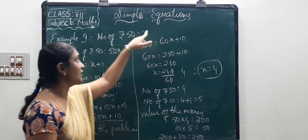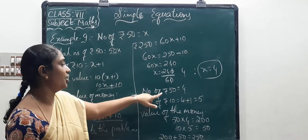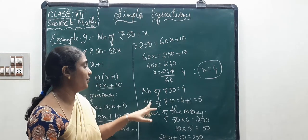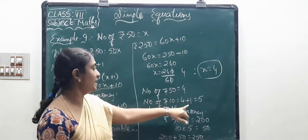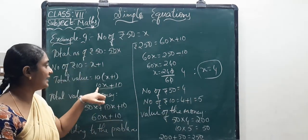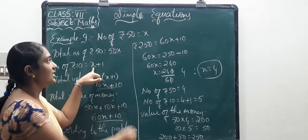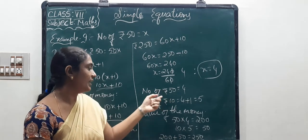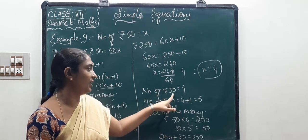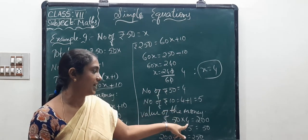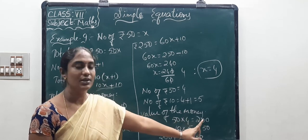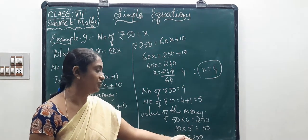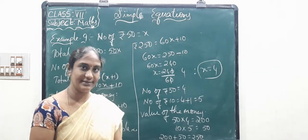Substituting X equals 4: number of 50-rupee notes equals 4. Number of 10-rupee notes equals X plus 1 equals 5. Verification: 50 into 4 equals 200, and 10 into 5 equals 50. Total equals 250 rupees. Now let us see the next sum.